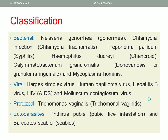Sexually transmitted infections can be divided into four groups: bacterial, viral, protozoal, and ectoparasites. Bacterial examples include Neisseria gonorrhea, Chlamydia infection, Treponema pallidum causing syphilis, Haemophilus ducreyi causing chancroid, Calymmatobacterium granulomatis causing donovanosis or granuloma inguinale, and Mycoplasma hominis.